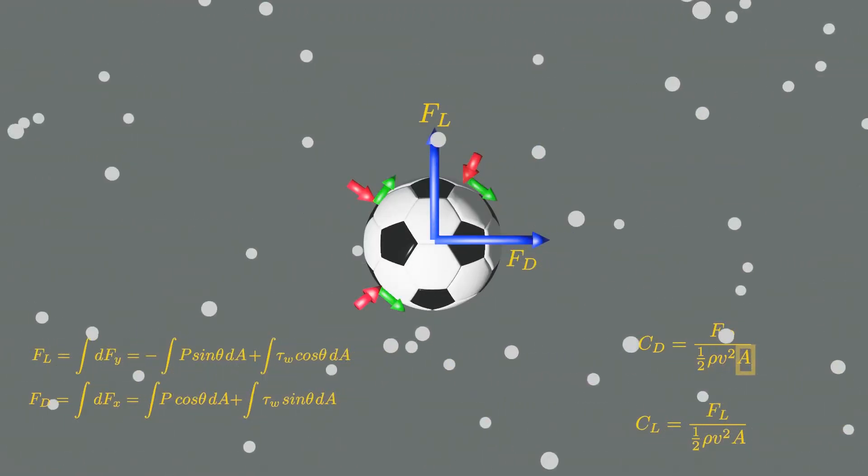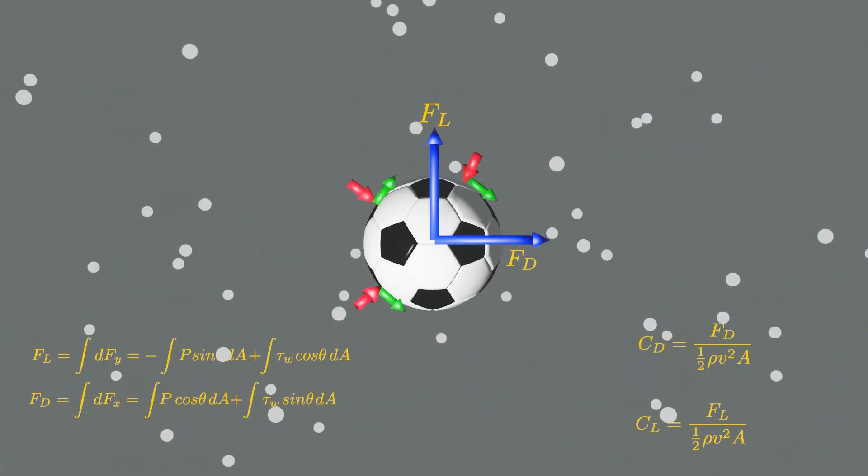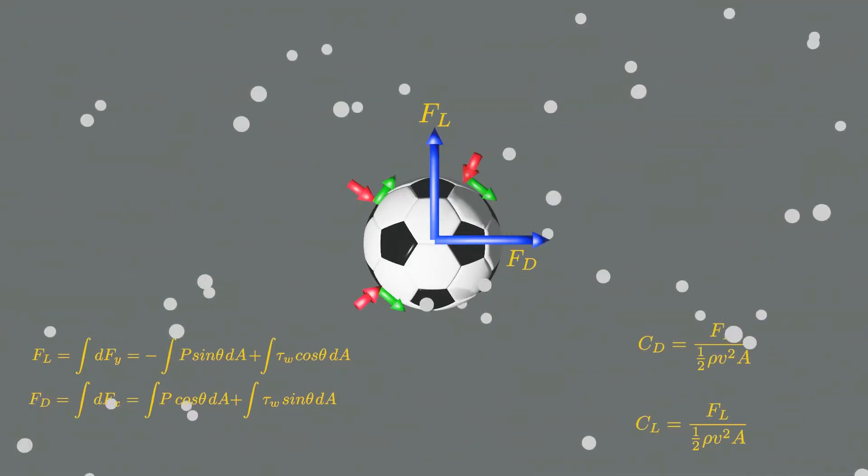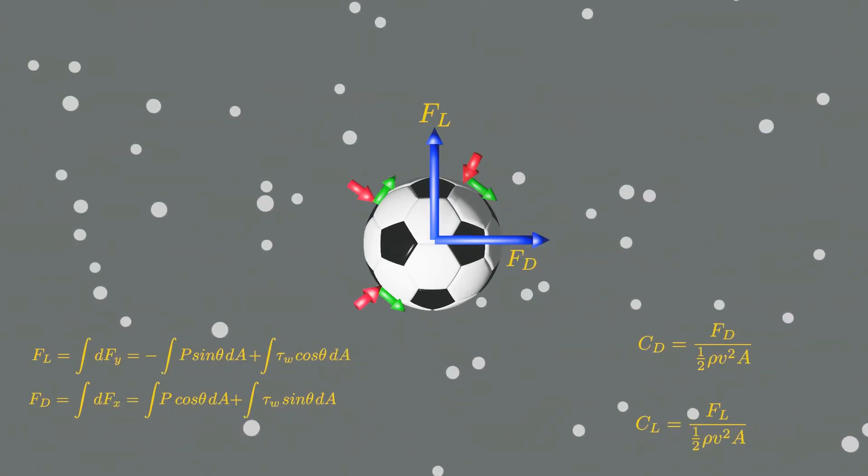The area on this formula can be frontal area or planform area. It depends upon the object orientation with respect to fluid direction.